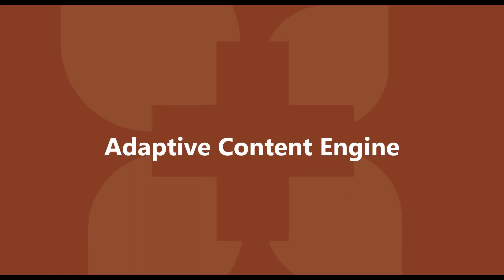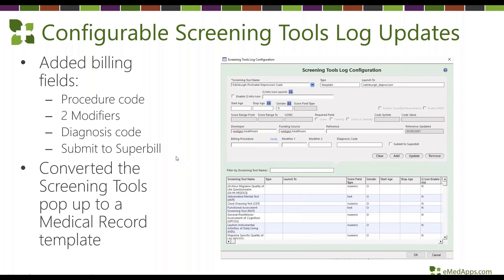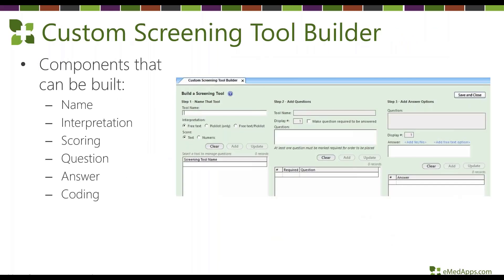Let's talk about ACE — the Adaptive Content Engine templates. The first enhancement is on the screening tools log: you can now add billing components. This is a significant new capability — you can set up and configure billing so that as you perform screening tools, any charge or add-on cost can be configured and set up within your practice, available to your end users, without any customization required.